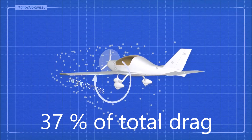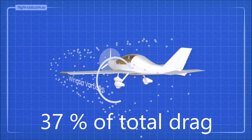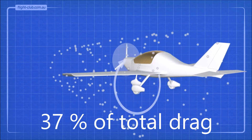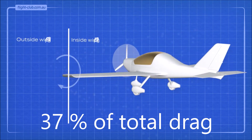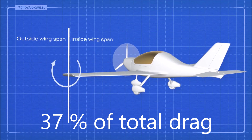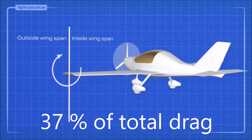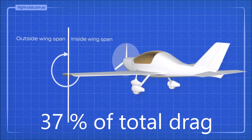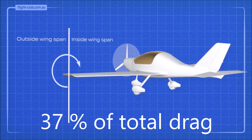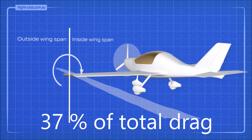And here is how it works. The upward flow of the vortex is outside the span of the wing, but the downward flow is inside the span, behind the wing.